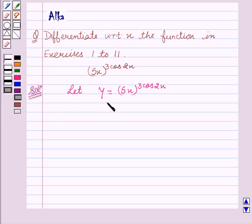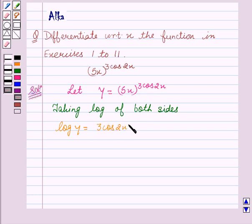Now we will take the log of both sides. Taking log of both sides, we get log y equals 3cos2x times log 5x.